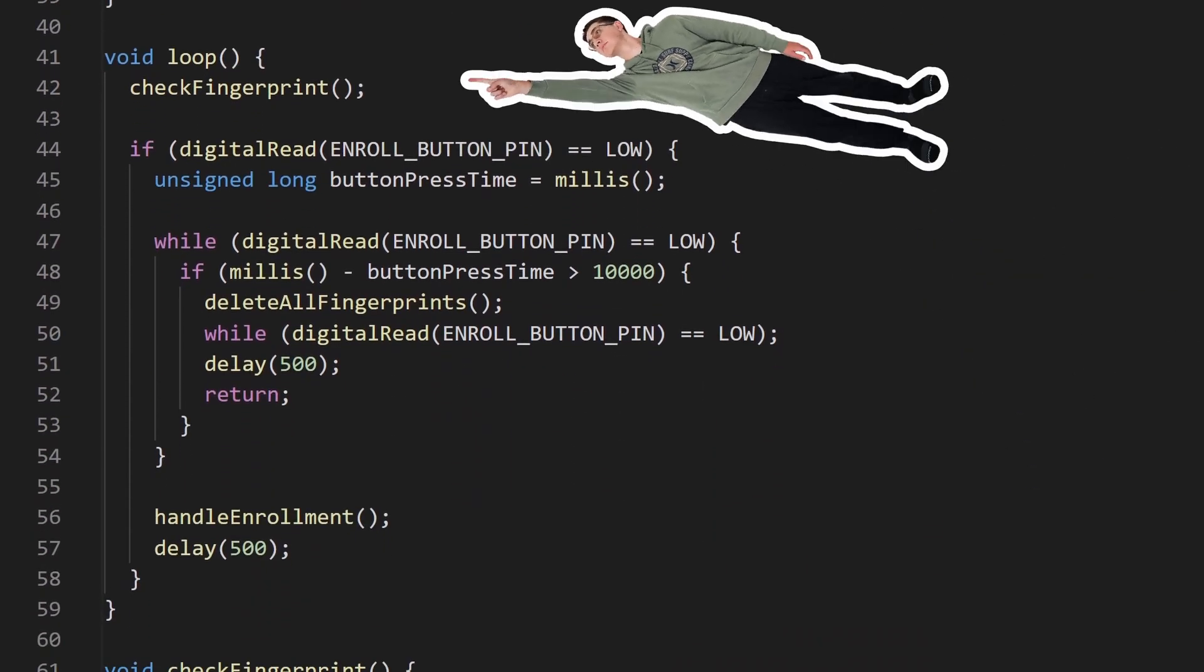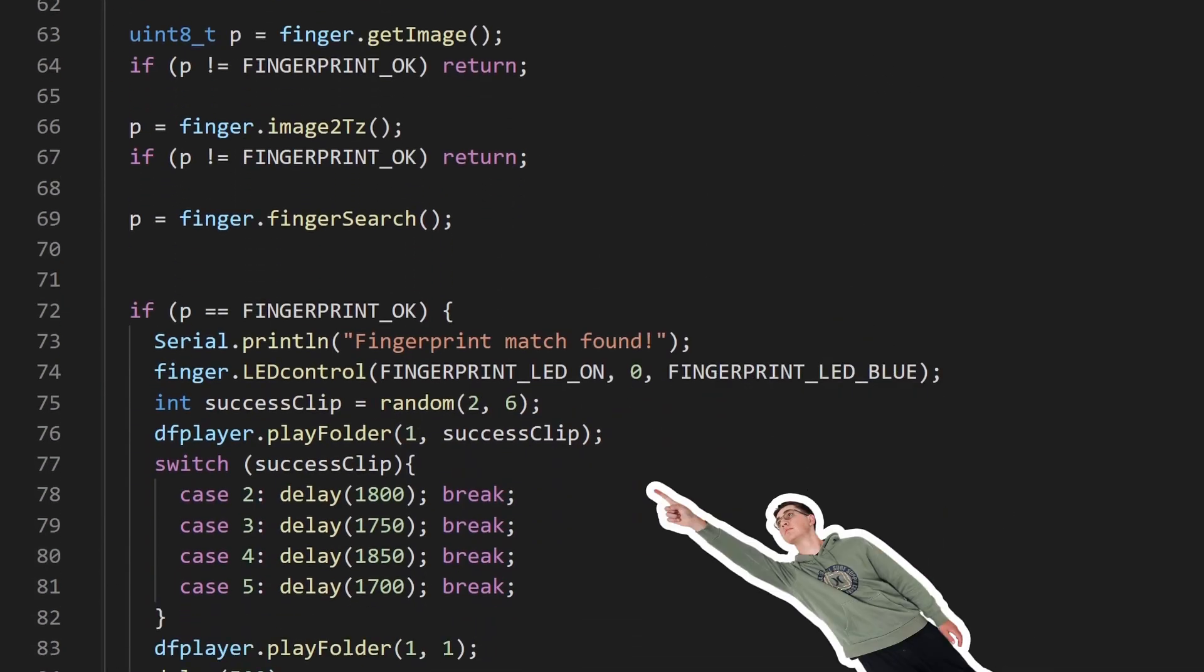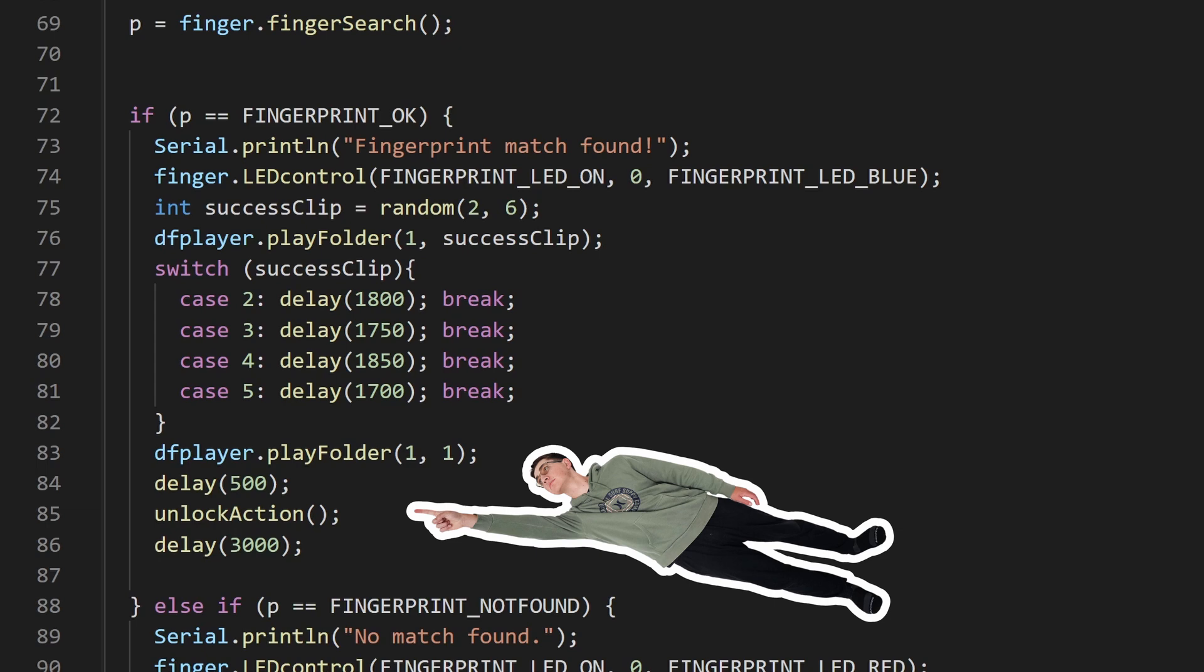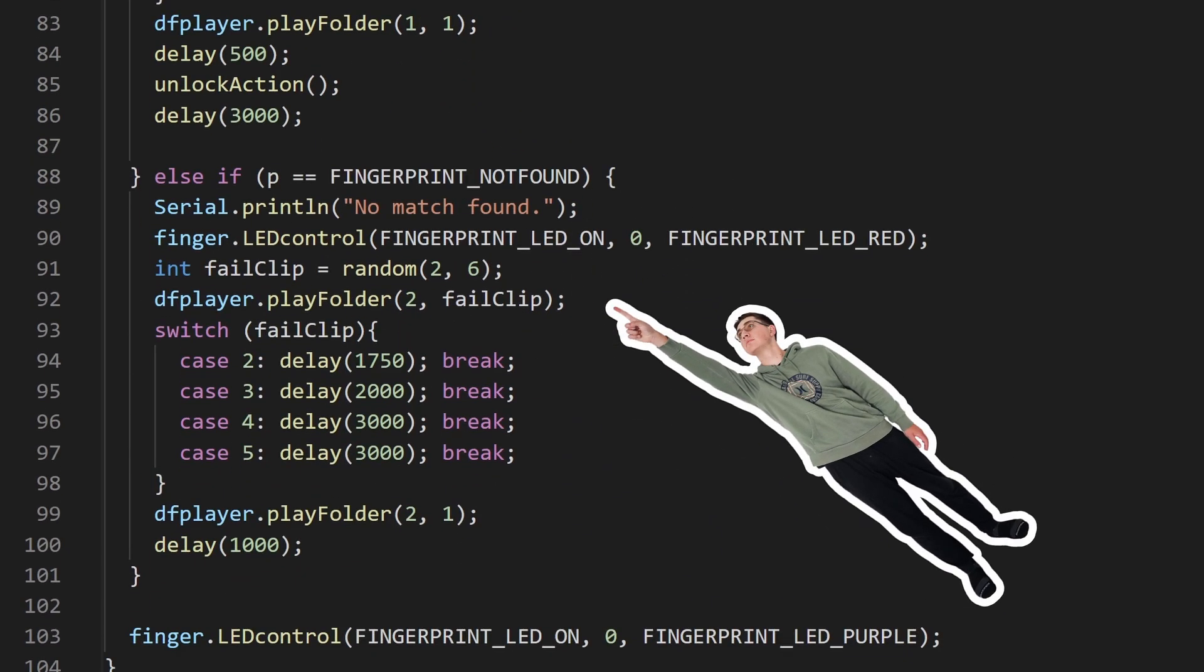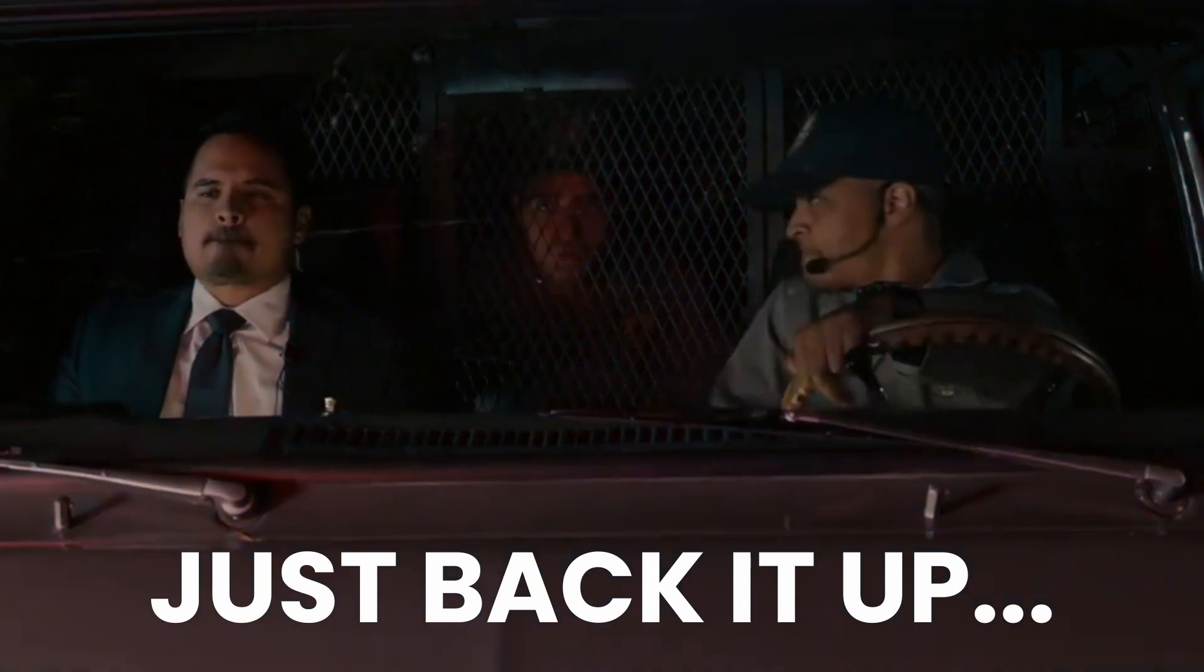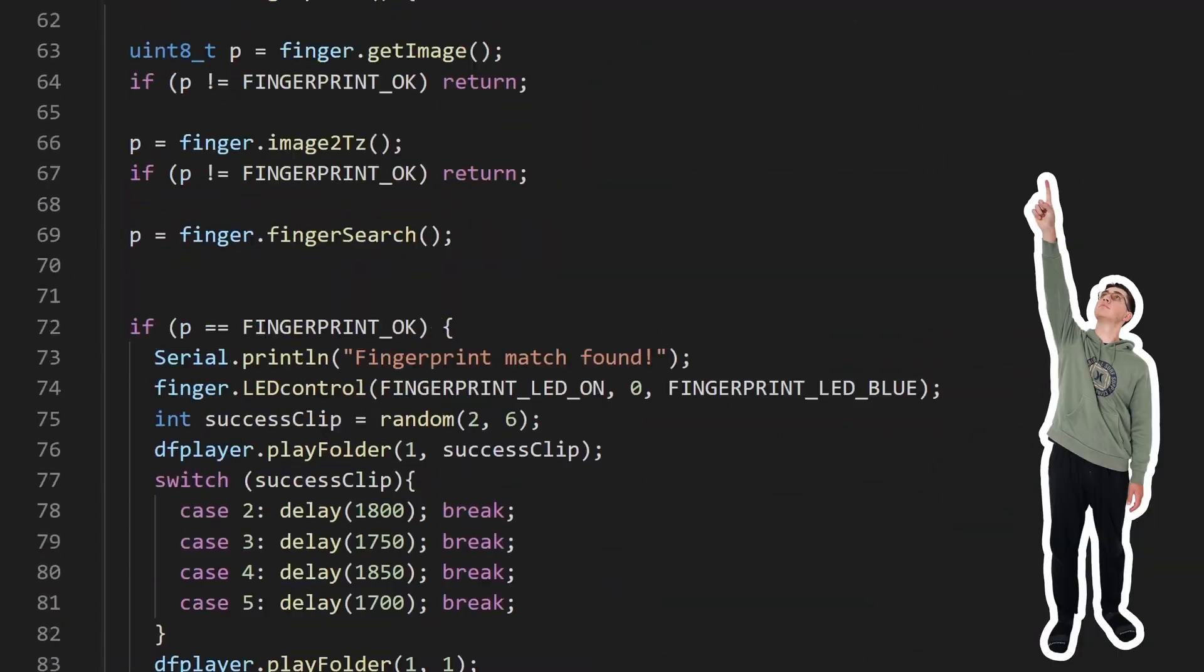From there, the loop function takes over. This is where the program runs continuously and performs tasks like calling the check fingerprint function. If a fingerprint match is found, we trigger a victory sound effect and unlock the solenoid. But if someone tries to gain access and their fingerprint doesn't match anything in our memory, we play a failure tone—basically a gentle warning to take as many steps away from the sourdough as soon as possible.